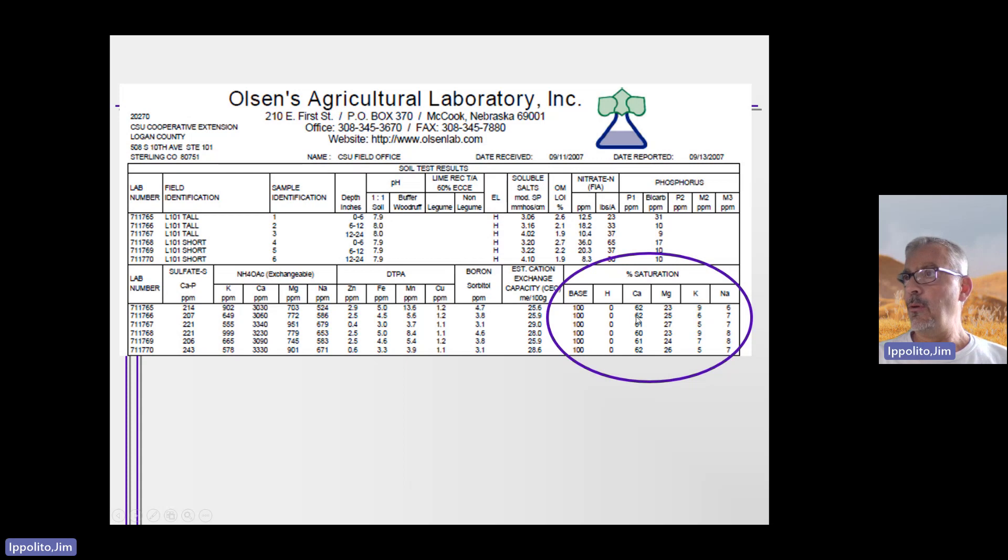The sample or the soil is dominated by calcium and magnesium and to lesser extents potassium and sodium. Look at the amount of hydrogen on the exchange sites. There's hardly any hydrogen on the exchange sites because this soil is at a pH of almost 8. The amount of hydrogens present in this soil are extremely low.